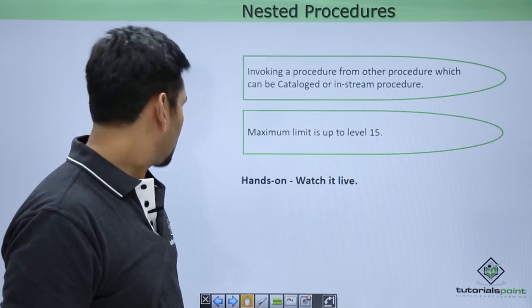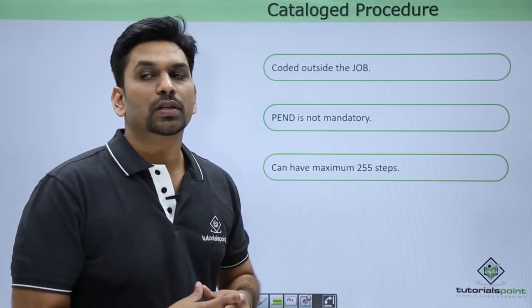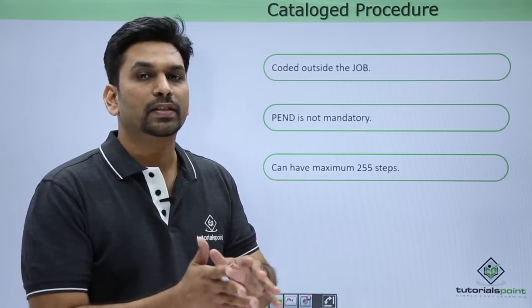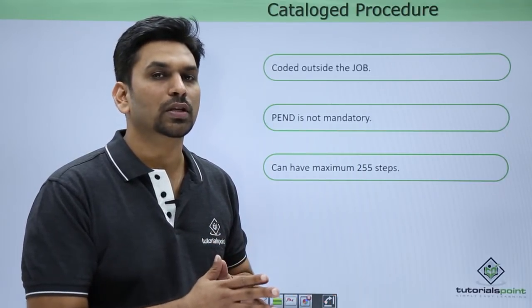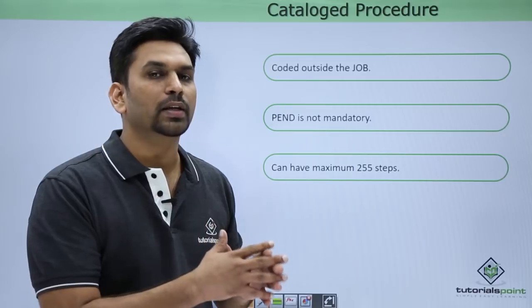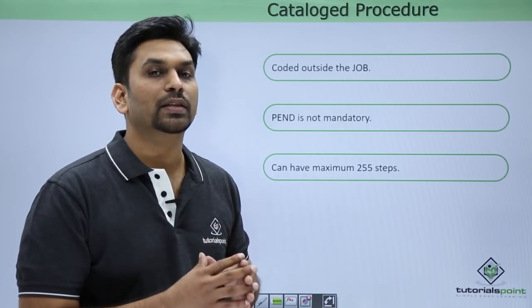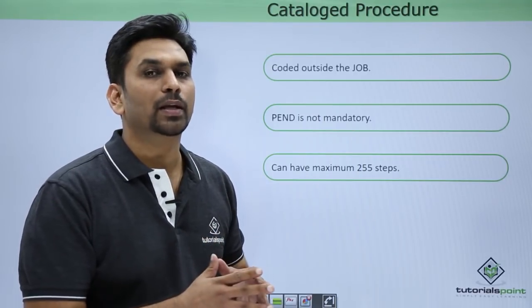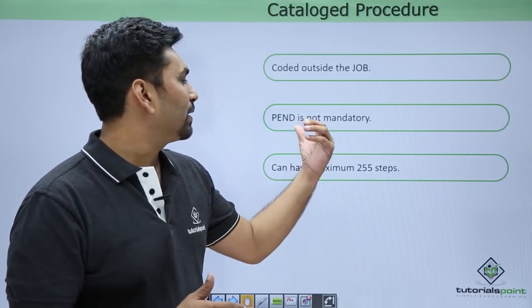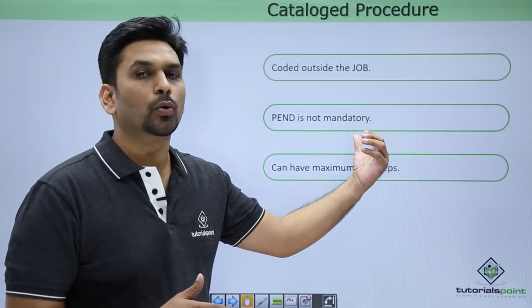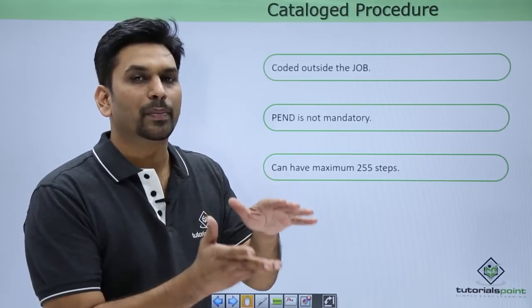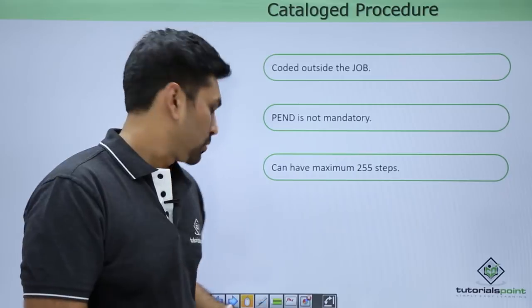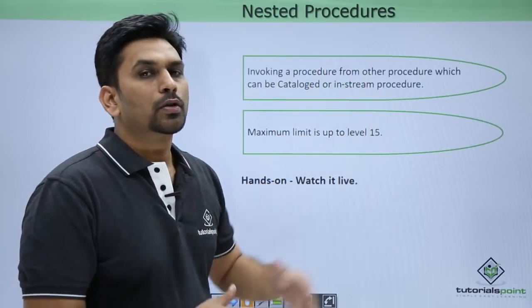Catalog procedures are coded outside the job. In in-stream procedures you do all the coding inside the job, but for catalog procedures you code them outside in any PDS, and that PDS you need to define in the JCLLIB — which we covered in libraries — because if you don't define JCLLIB it will say procedure not found. The PEND statement is not mandatory for catalog procedures, and a catalog procedure can have a maximum of 255 steps.